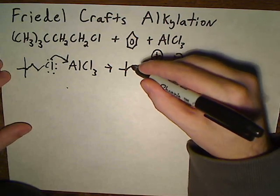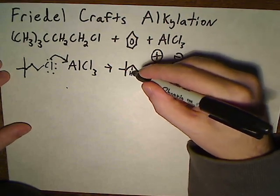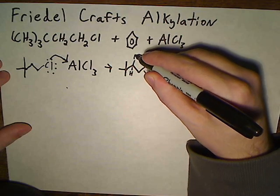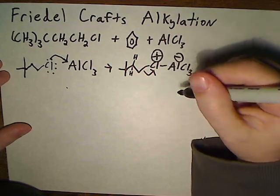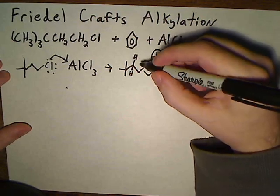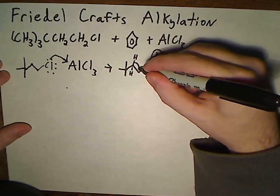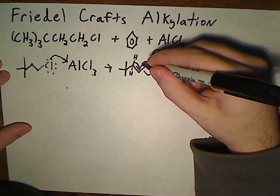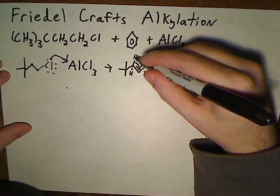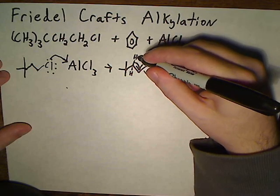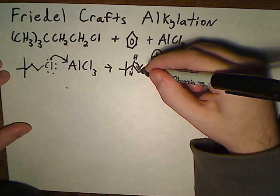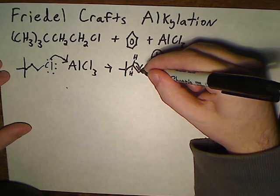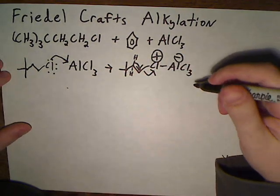But luckily we have an adjacent carbon which has two hydrogen atoms attached to it. So what we get right away is a hydride shift, which you might remember from OCHEM1, in which this whole hydride, which is the hydrogen and its two electrons, shift over to where the carbocation would be to stabilize it.